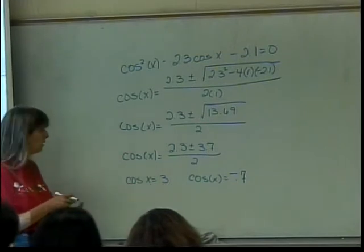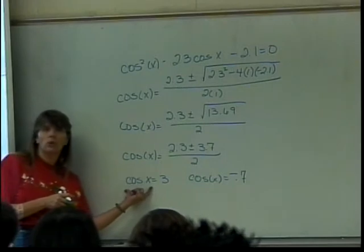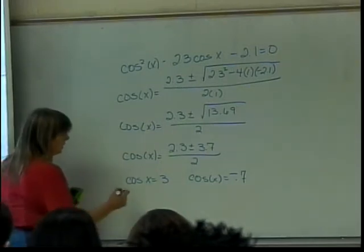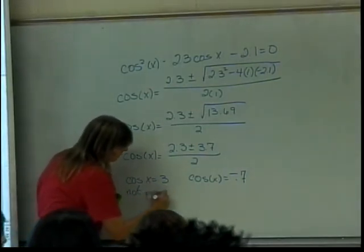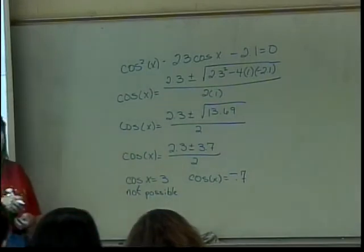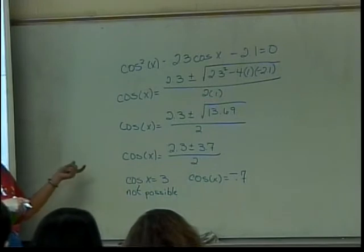Another way to think of it is your cosine of x values only go from negative 1 to 1. So 3 is not in there at all. This thing is not possible. You can either think of it as it's not in the range of the cosine or it's not in the domain of the arc cosine. When you do it on your calculator, it will tell you it's not in the domain because you're doing it with an arc cosine.